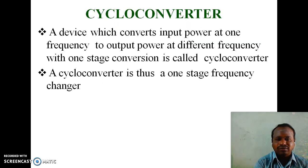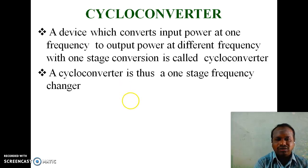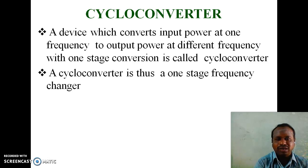The second type of AC to AC converter is the cyclo-converter. A device which converts the input power at one frequency to output power at a different frequency with one stage conversion is called a cyclo-converter. So, a cyclo-converter is a one-stage frequency changer. From the name itself, it is understood that it converts the cycle — cycle means frequency — so a cyclo-converter is a one-stage frequency converter.